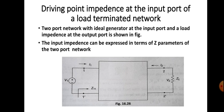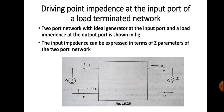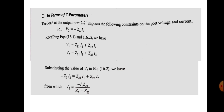The Z-parameter equations are: V1 = Z11·I1 + Z12·I2, and V2 = Z21·I1 + Z22·I2. We know that V2 is the voltage across the output terminal, so we can write V2 = −I2·Z_L, because I2 is flowing out of the port. The load at output port 2-2' imposes the constraint: V2 = −Z_L·I2.